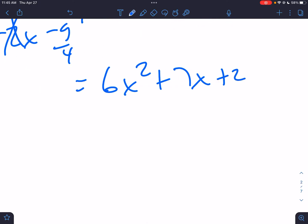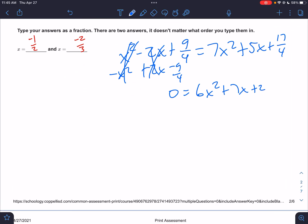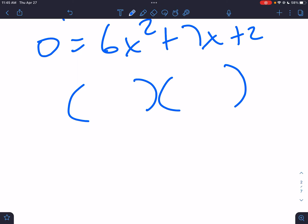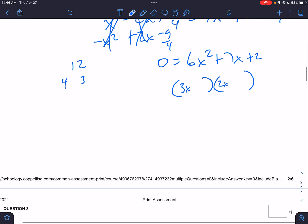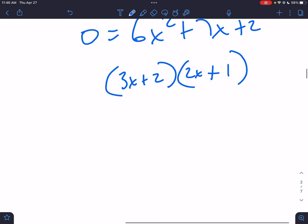Now it equals 0. This is one of the new factoring questions. 6 times 2 is 12. What factors of 12 add up to 7? It's going to be 4 and 3. I make my parentheses. It has to be 3 and 2. 3 times 1 gets me 3, 2 times 2 gets me 4. So there's my factors.